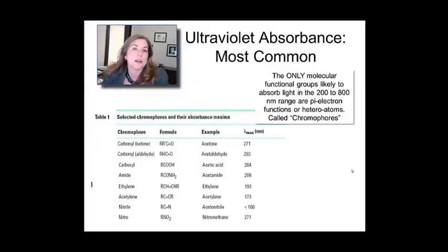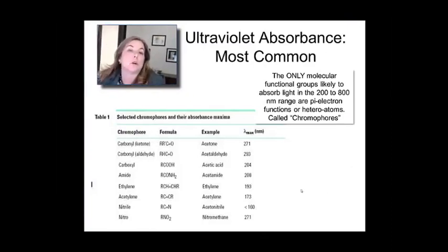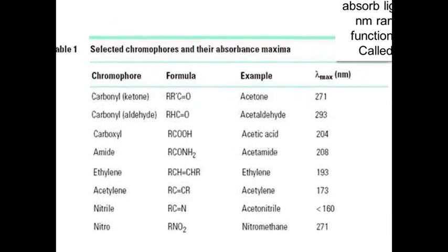Ultraviolet absorbance is a technique that is really powerful for quantitative analysis but less so for qualitative. Still, you can learn a little bit about a molecule by knowing where it's absorbing in the ultraviolet and visible part of the spectrum. In this table, you see a list from Agilent of common compounds and where they might typically have their lambda max value.